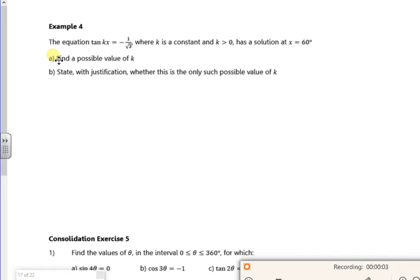Hiya, so this is the ones where it's good to know that you can't just do it on your calculator because of this kx bit. So I've got tan(kx) is minus 1 over root 3, but it tells me I've got a solution of 60 degrees.